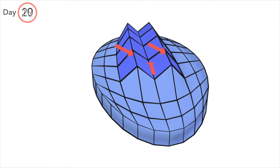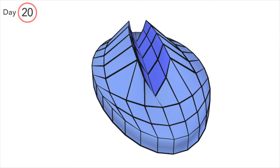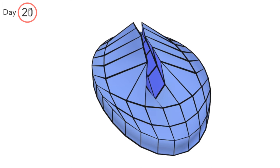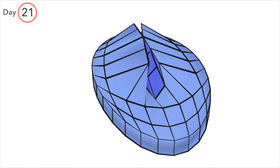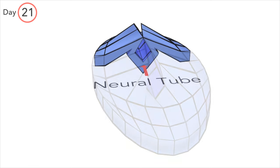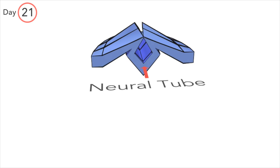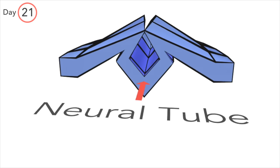These folds progress toward each other and begin to fuse around day 21. Where they have fused, they form a hollow cylinder, which is the neural tube.